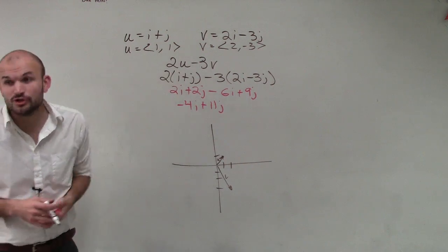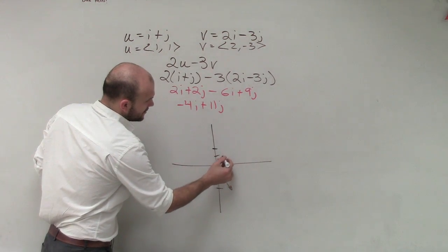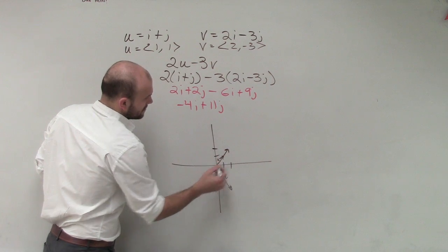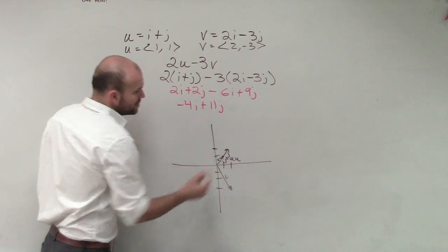Now it says 2u. So 2u, we know that now this is going to get doubled. That is now equal to 2u.